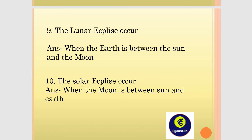I have a question about lunar eclipse and solar eclipse, because there is confusion between the two. Lunar eclipse means Surya Grahan — wait, no. Lunar eclipse is Chandra Grahan. So the lunar eclipse is related to the moon.